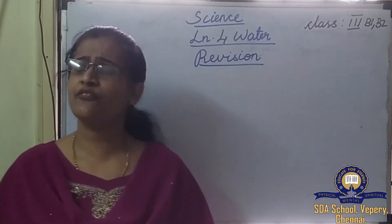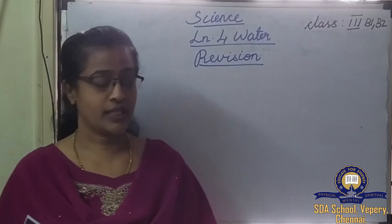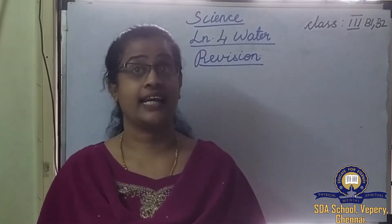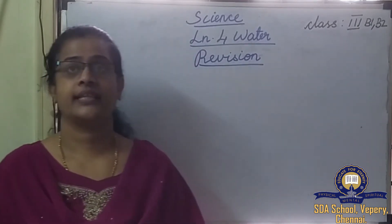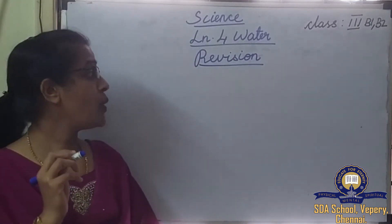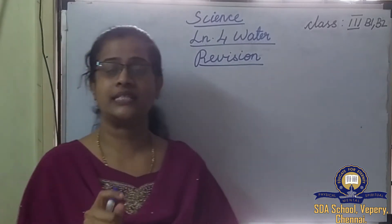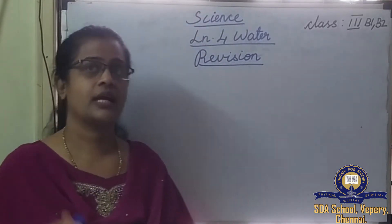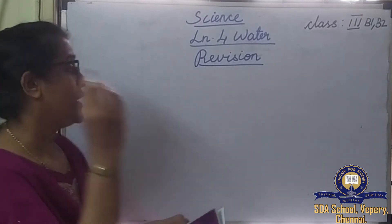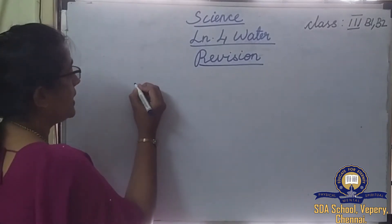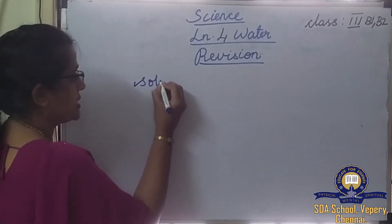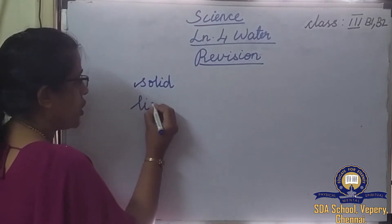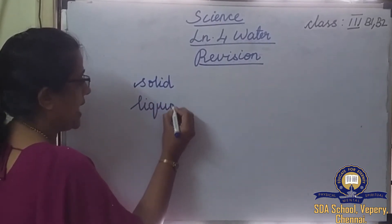Water is colorless. The three main important points in this lesson: water has three forms — solid, liquid, and gaseous.